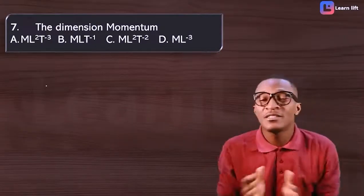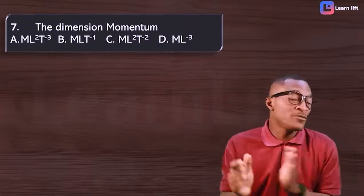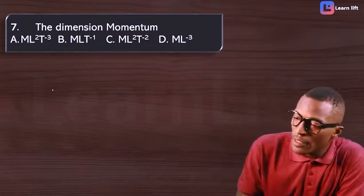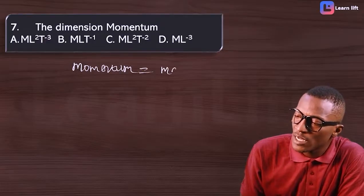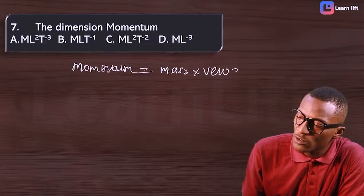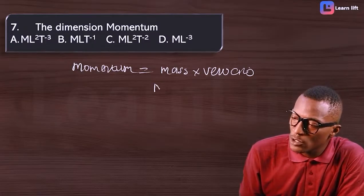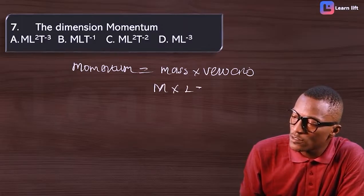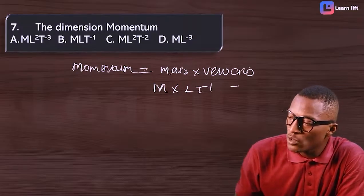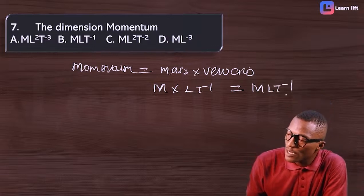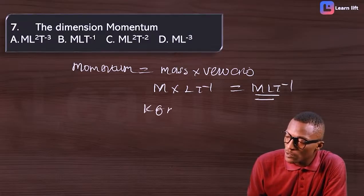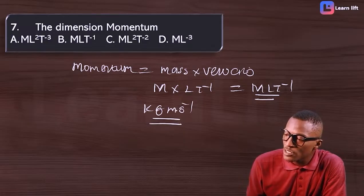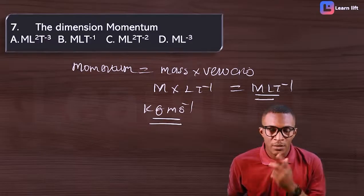What is the dimension for momentum? Momentum equals mass times velocity. Dimension for mass is M and velocity is LT⁻¹, so combined that gives MLT⁻¹. In unit terms, mass is in kilogram, length is meter, time is seconds — so momentum is kilogram·meter per second.